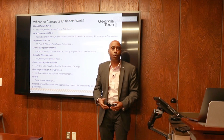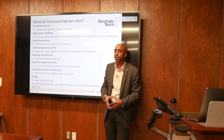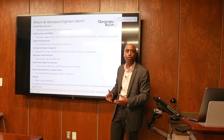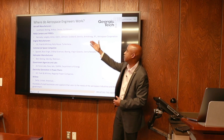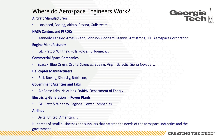So where do our students go to work from Georgia Tech? Our aerospace engineering students go to a variety of places. If you look at the list at the top, these are aircraft manufacturers — companies most of us have heard of: Lockheed Martin, Boeing, Airbus, and companies that put a final fixed wing aircraft together. All of the NASA centers — we have students that intern or go to work for each NASA center, plus companies like NASA's Jet Propulsion Lab and Aerospace Corporation.